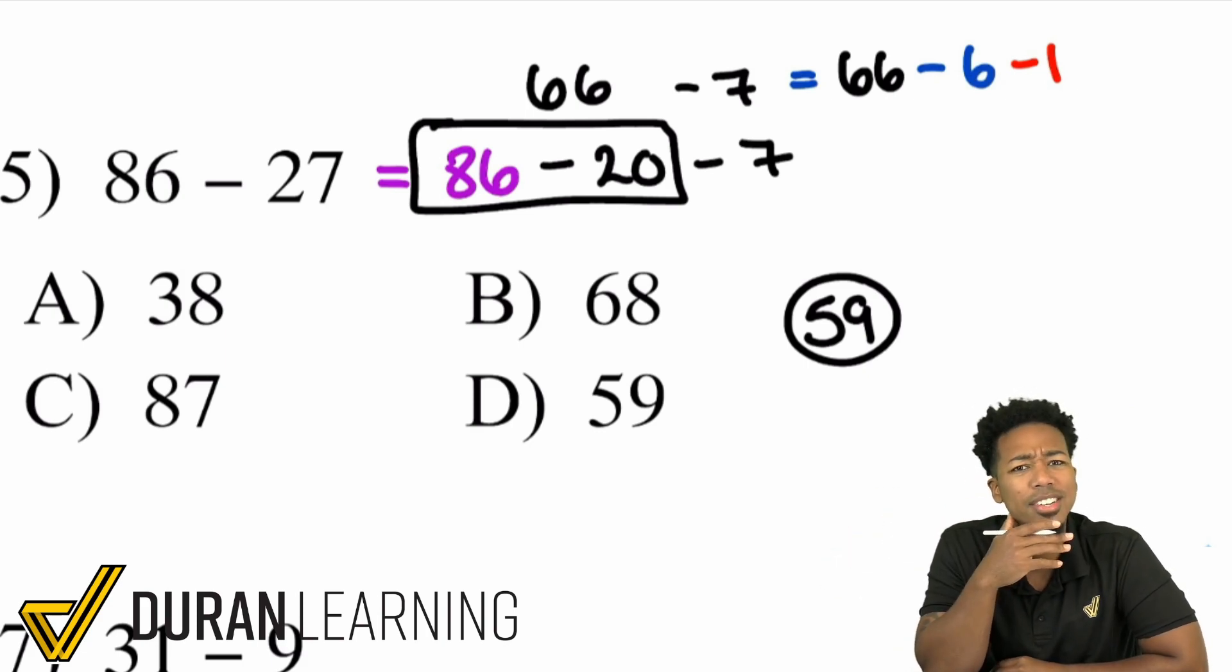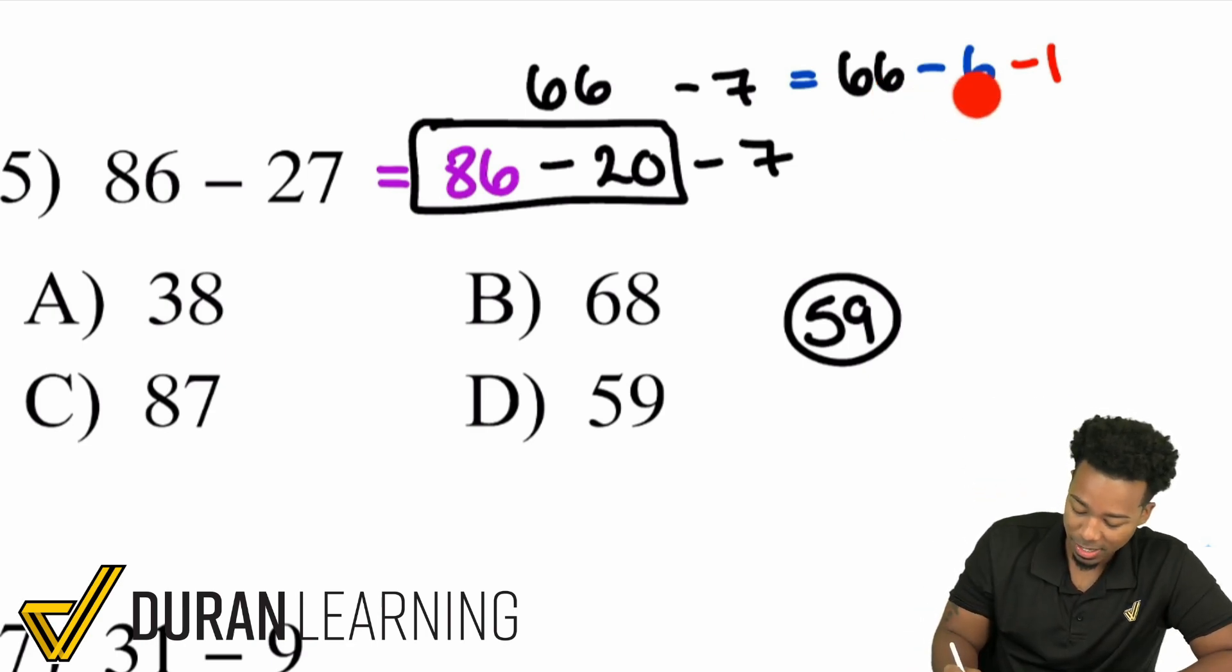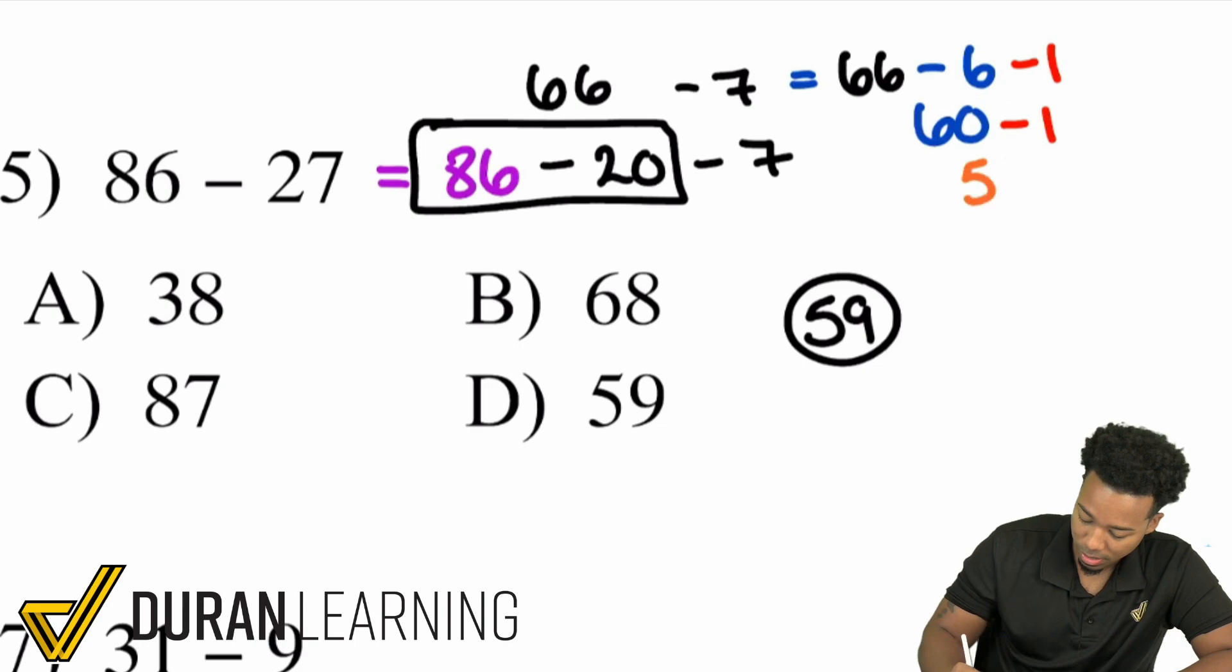But why did I choose 6? The reason I chose 6 is simply because of this. I chose it because 6 minus 6 is 0. So in my head this would become 60 minus 1 and 60 minus 1 is 59.